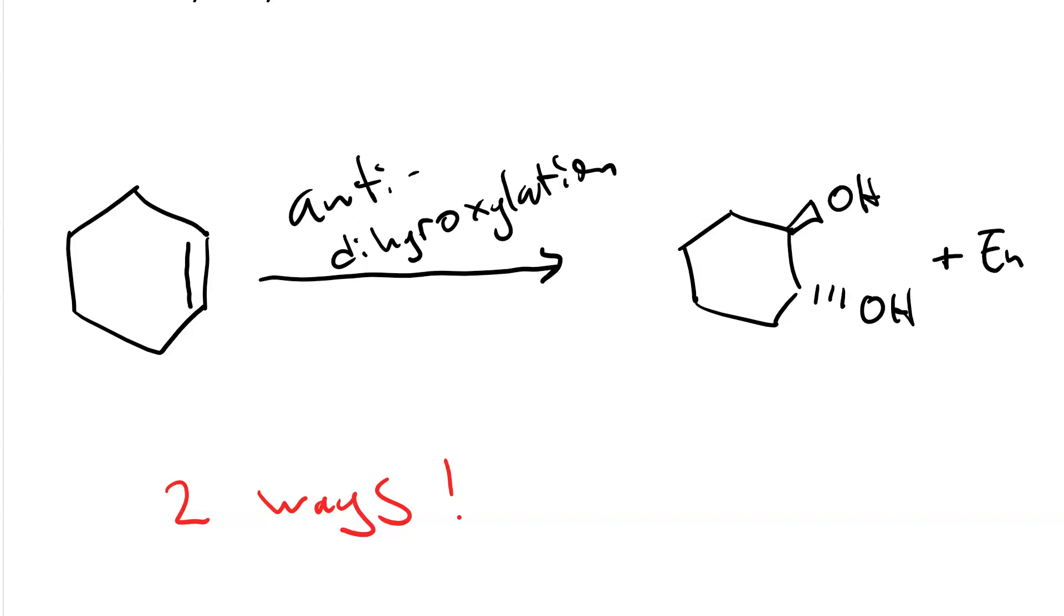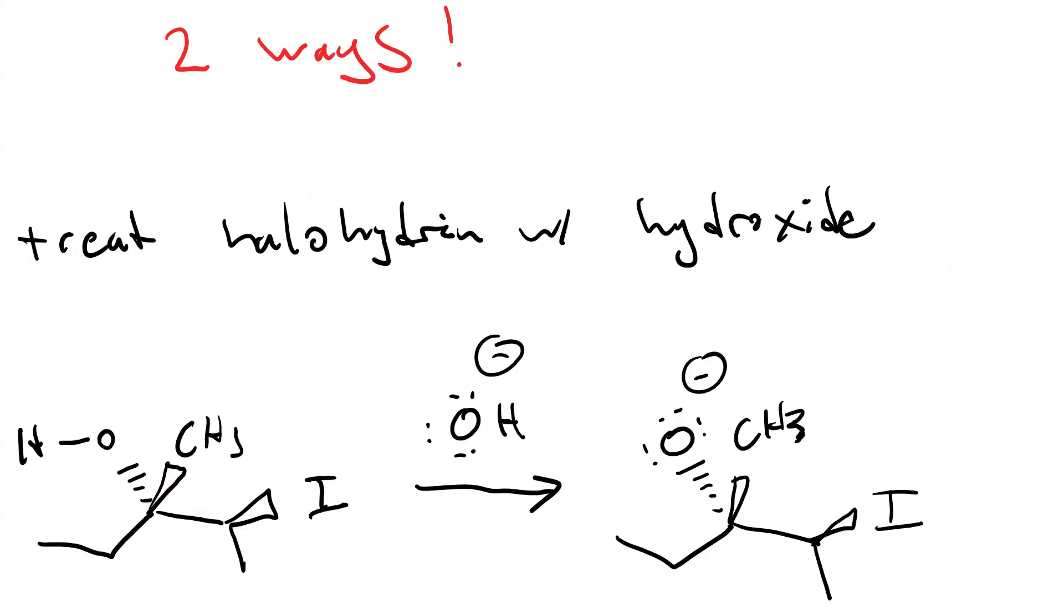There are two synthetic pathways that we can use to achieve anti-dihydroxylation of an alkene. The first is to treat a halohydrin with hydroxide. The hydroxide acts as a base and does proton transfer on the hydroxyl group of the halohydrin, creating an alkoxide.